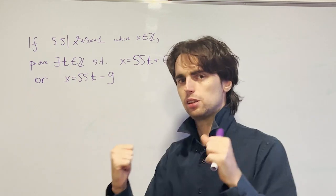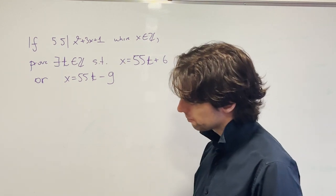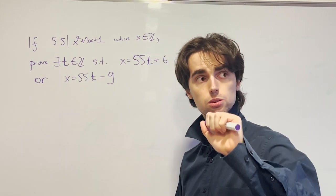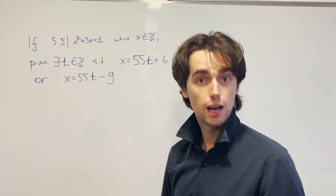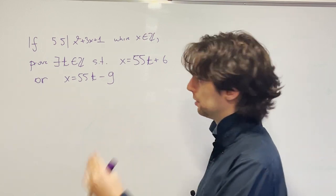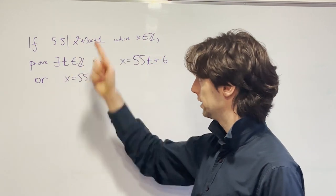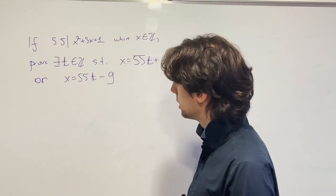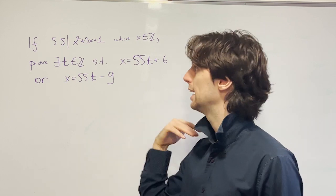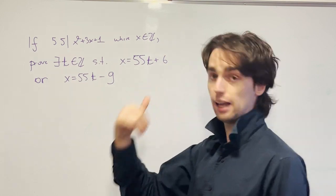There's two things you can do faster. If you want to do these remainders, you can say, what is 55? Well, that is 11 times 5. I can go over all the remainders of 5, all the remainders of 11, because this implies that both 5 and 11 divide x squared plus 3x plus 1.